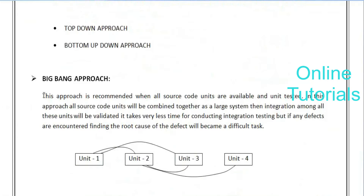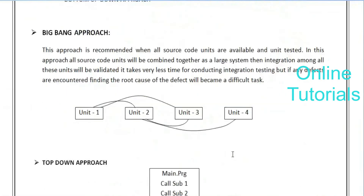The big bang approach is recommended when all source code units are available and unit tested. In this approach, all source code units are combined together as one large system. This means every individual component should be executed successfully before moving forward to the next stage of integration. After integrating, if defects are encountered, finding the root cause becomes a very difficult task.